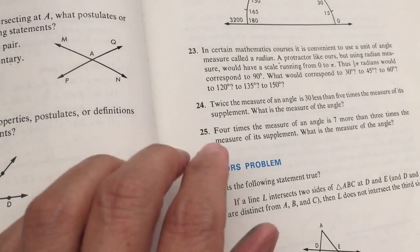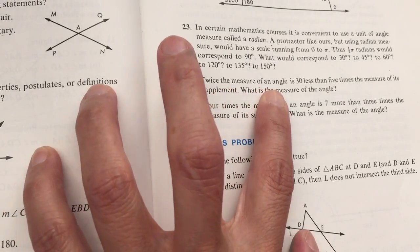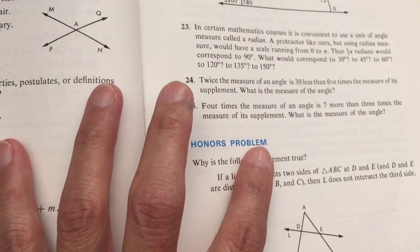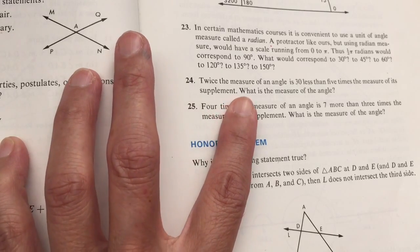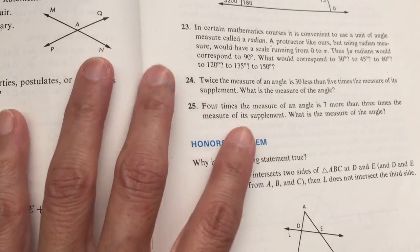Hello dear friends, here is another problem. Twice the measure of an angle is 30 less than 5 times the measure of its supplement. What is the measure of the angle?